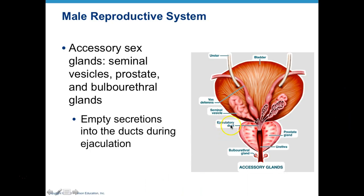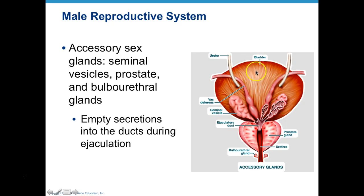The three major accessory sex glands are the seminal vesicle, the prostate gland — which is one big gland — and the bulbourethral gland, which is teeny tiny and also known as Cowper's gland. Most of these structures are located posterior and inferior to the urinary bladder.